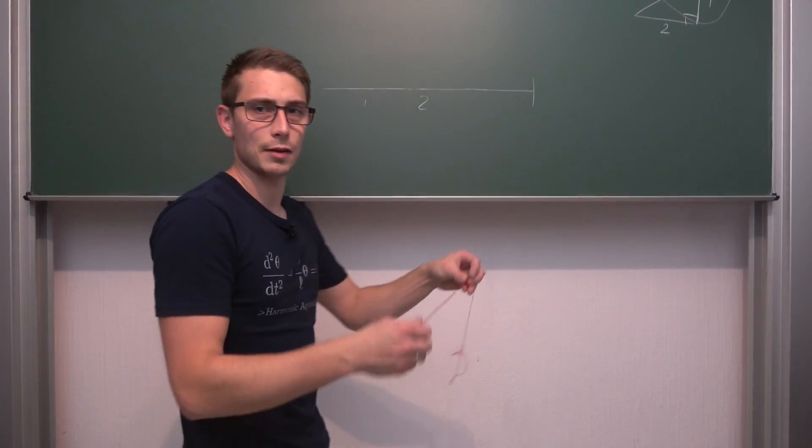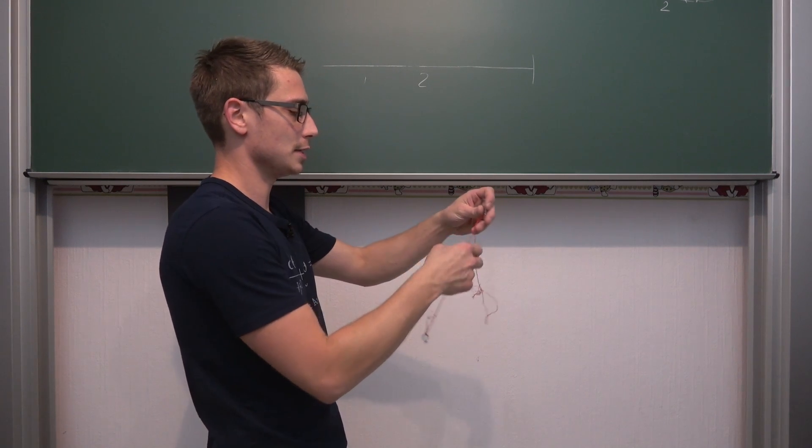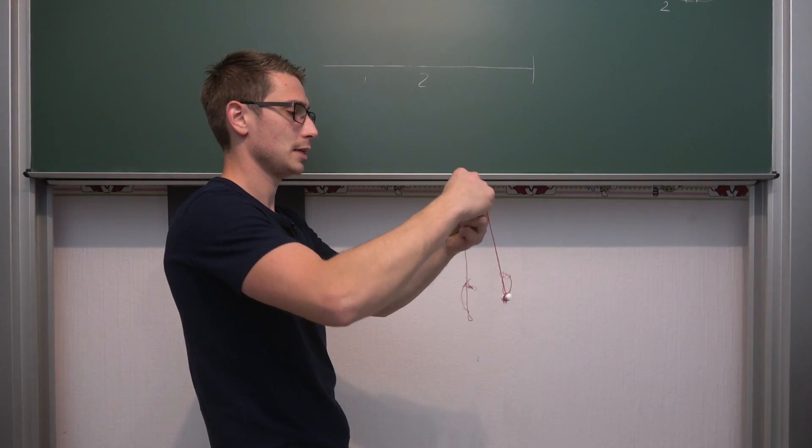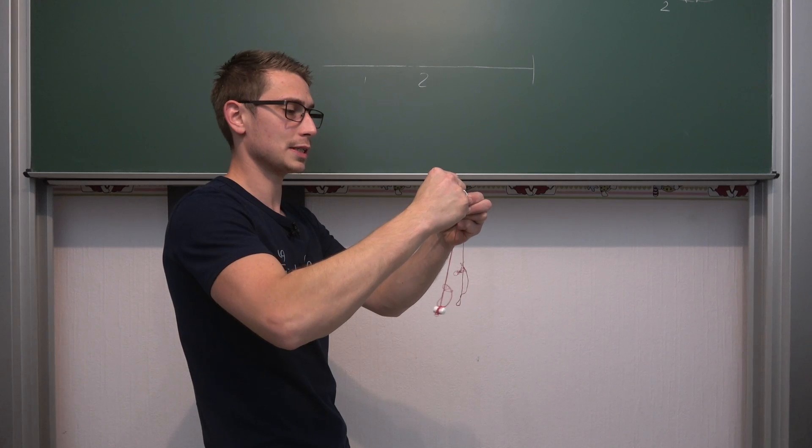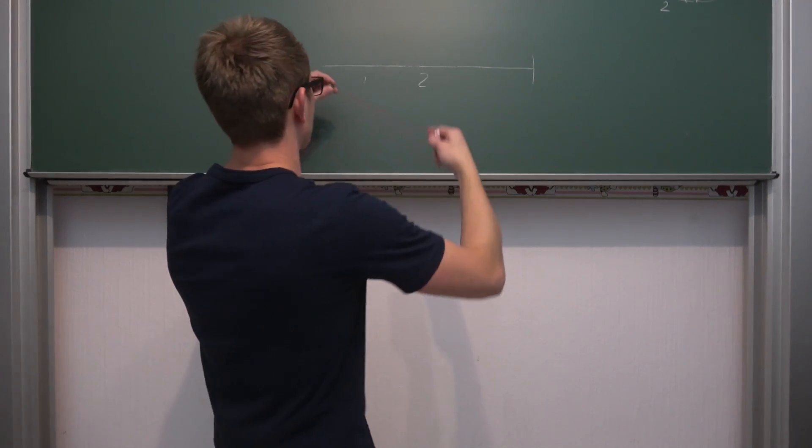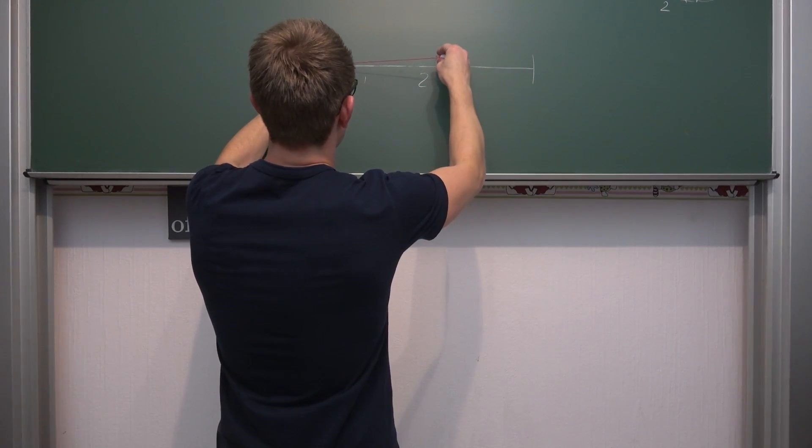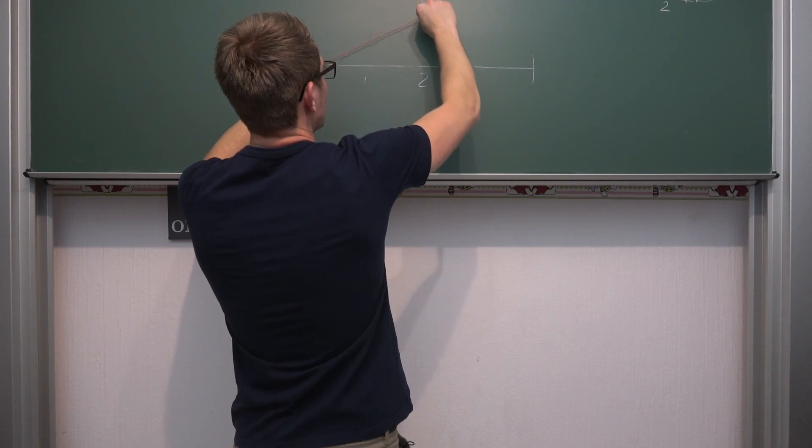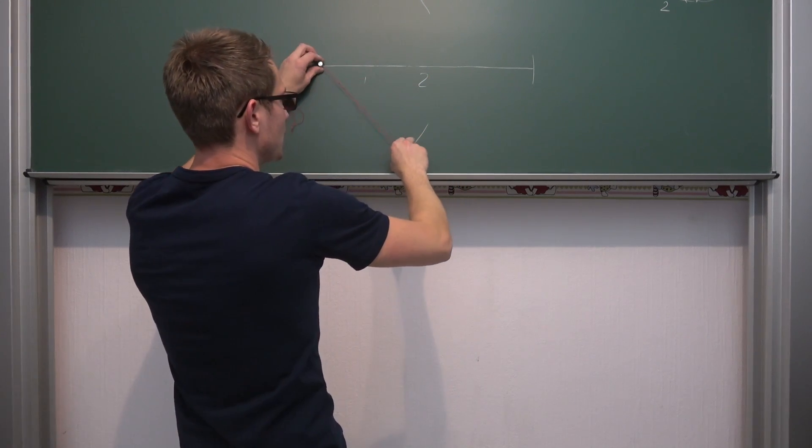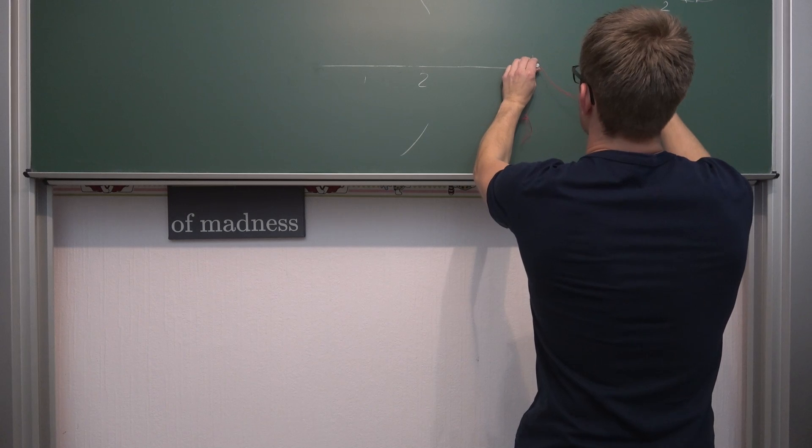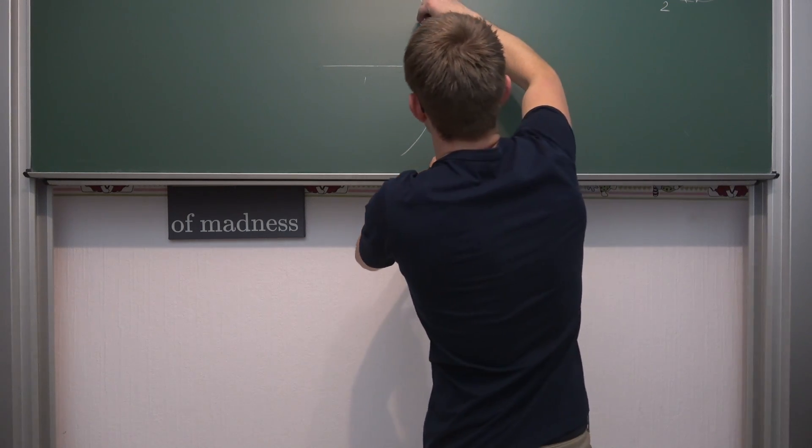Now to basically get ourselves a bisector all we have to do is get ourselves the compass to be a bit longer than half of our side length that we got right here. And then we are going to put it in on one side. Then we are going to draw these little circle parts. We are going to go to the other side.